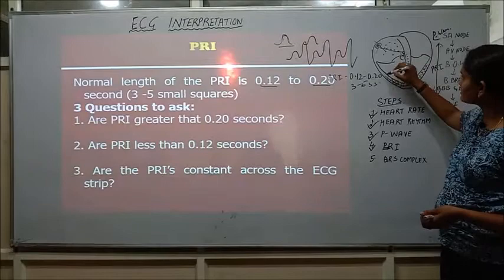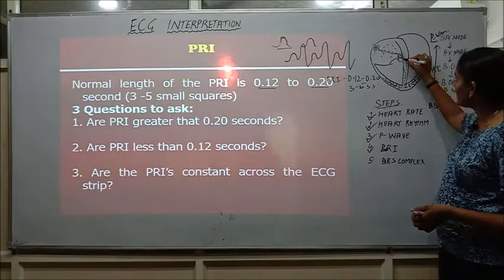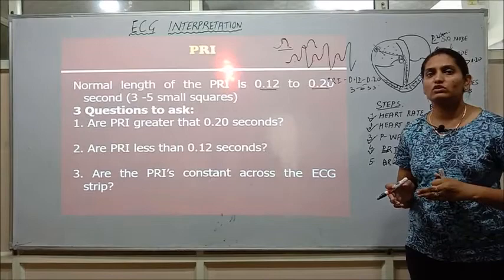So the time from this to this to this will take around 0.12 to 0.20 seconds. But if the impulse is directly starting from here and it is going down, so the time interval taken between the atrial contraction and the ventricular contraction will become much less, much less than 0.12 seconds. So the answer for this would be atrial dysrhythmias.